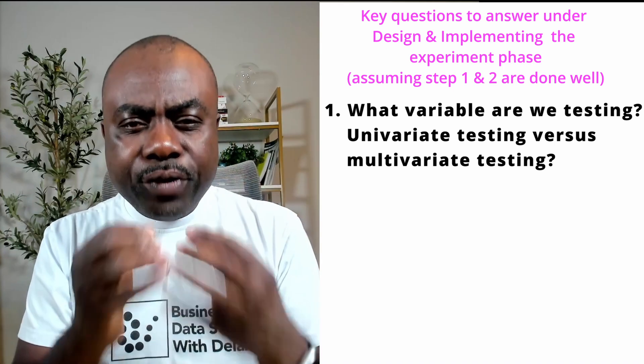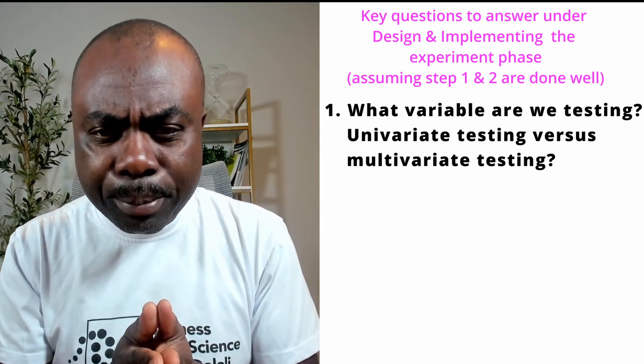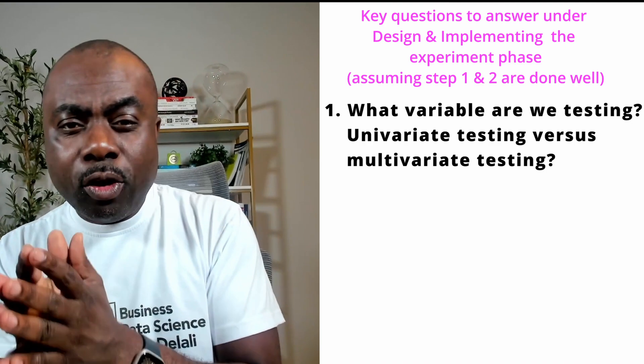Assuming that the objective of the experiment is very clear and the metric of success is already aligned on — these are step number one and step number two discussed in our previous video — then now is the time to dive into the design and implementation of the experiment. The number one question to answer under this step is: what variables are we testing and how many variables are we testing? If you're running a marketing campaign and your goal is to test different types of marketing offers, then your variable here is marketing offer.